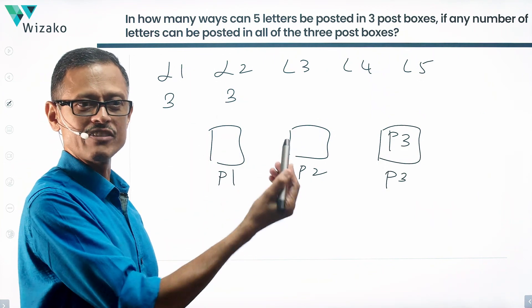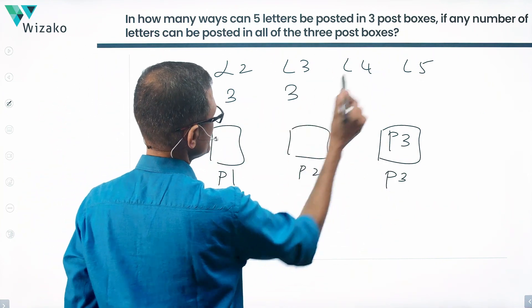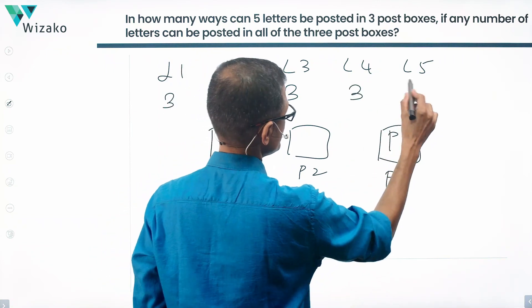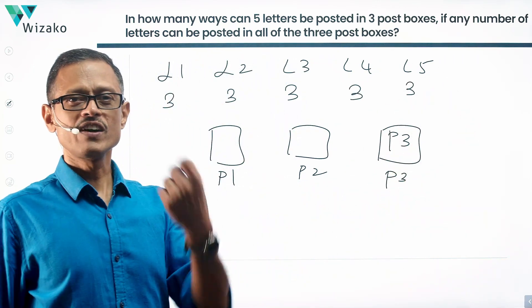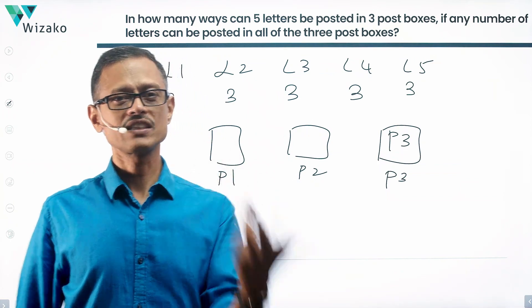The third one, again, it's got three ways. It can go into box one or box two or box three. So it's got three ways. Letter four, same three ways. Letter five, same three ways. So I can post the first letter in three ways and the second in three ways and the third in three ways and the fourth in three ways and the fifth in three ways.